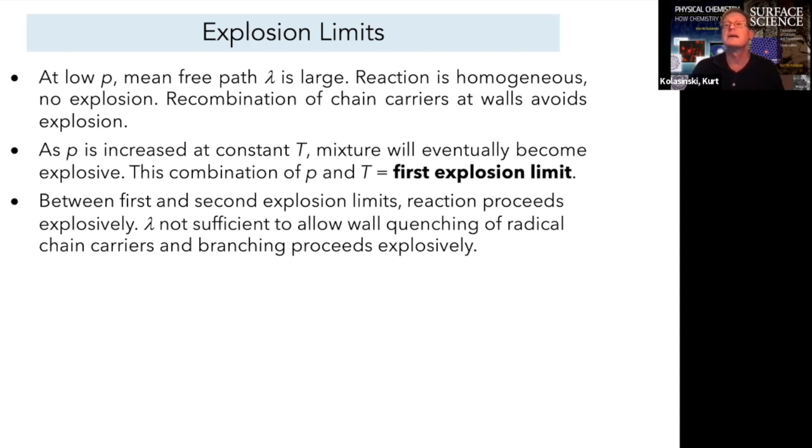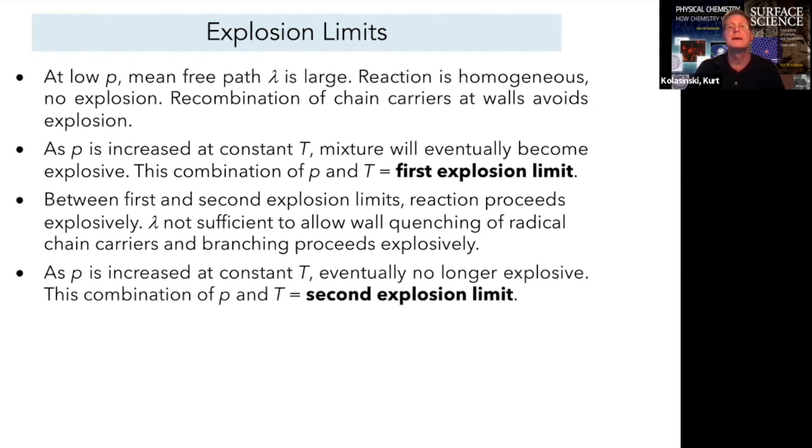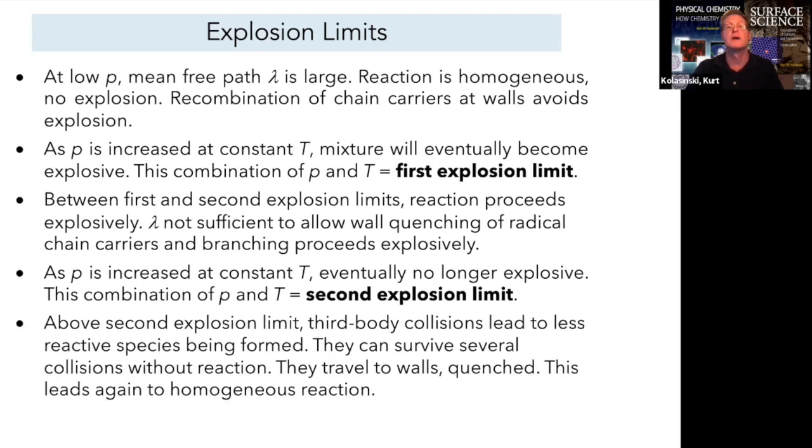Increase the pressure yet more. The mean free path is increasing. And the extra thing that's happening in the H2 plus O2 system is we're going to hit a second explosive limit where the system is going to go back to homogeneous behavior because there are a lot of less reactive species that are being formed. They're radical species, but they're less reactive. And so they can survive several collisions, and they get out to the walls where they'll, again, be quenched. So the system reacts homogeneously.